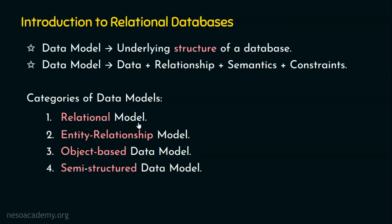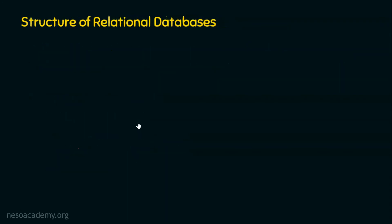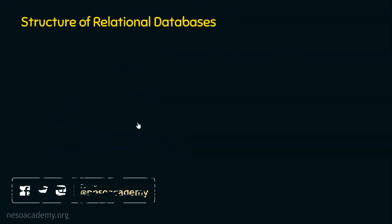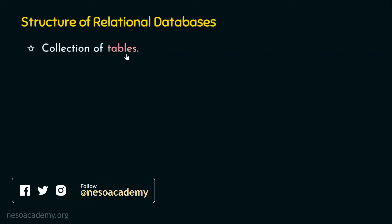If you are clear with the relational model, then understanding relational databases is easy. Let's see the basic structure of relational databases. What is a database? Basically, a database is a collection of tables. A table is a data structure used to describe data in rows and columns.